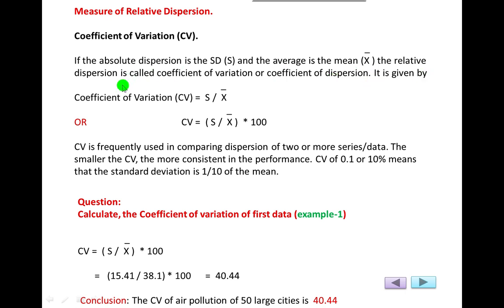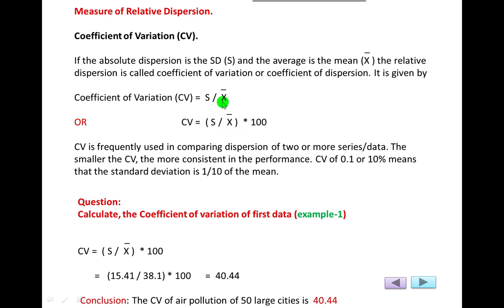The formula of the coefficient of variation is very simple: standard deviation divided by mean x-bar, or standard deviation divided by mean x-bar multiplied by 100. If you want to convert the data into percentage, multiply by 100; without percentage, use the first form. Both are the same — this gives the result in percentage, and this gives the result without percentage.